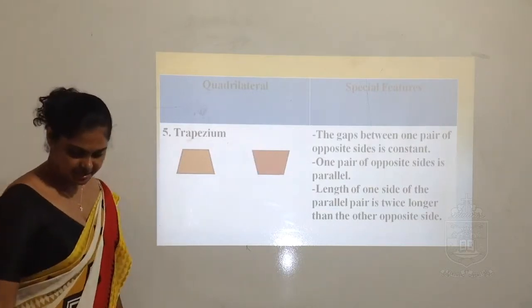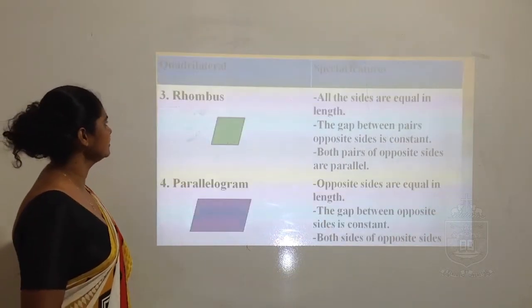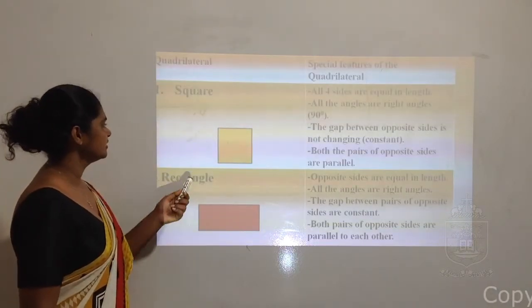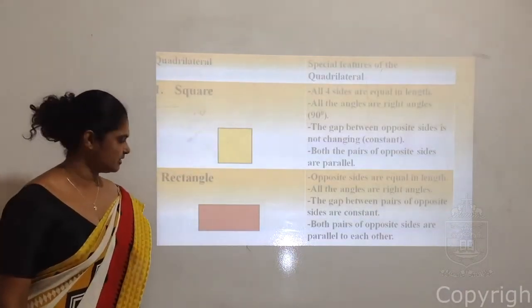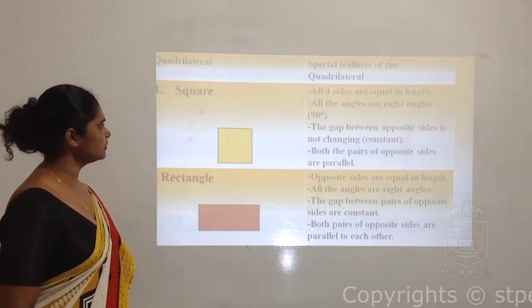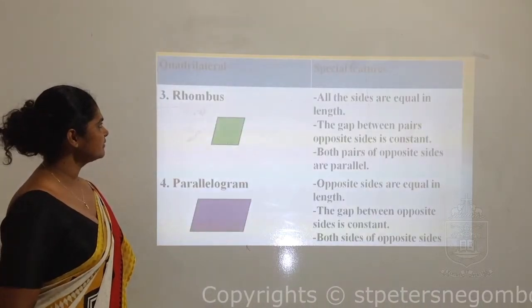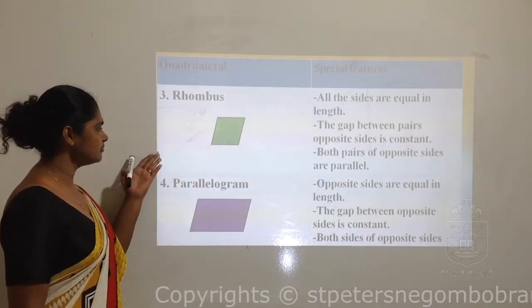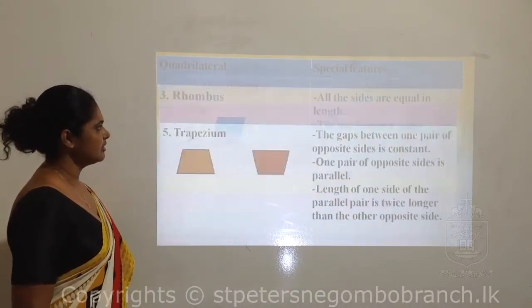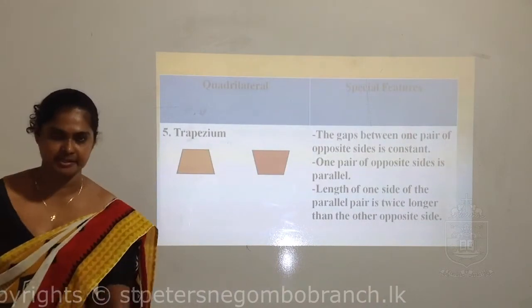So the quadrilaterals we learned are: square, rectangle, rhombus, parallelogram, and finally trapezium.